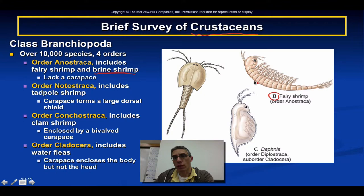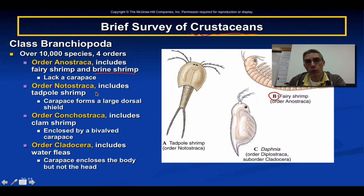The second order is Notostraca, which includes the tadpole shrimp. In this case, the carapace forms a large dorsal shield. You can see this in example A — this is a tadpole shrimp, falling into the category of animals with a very large carapace.